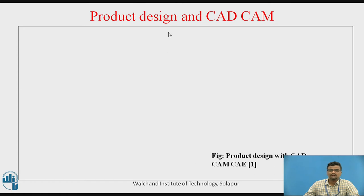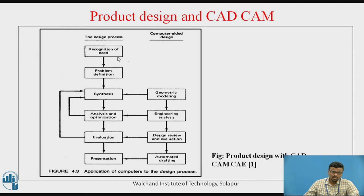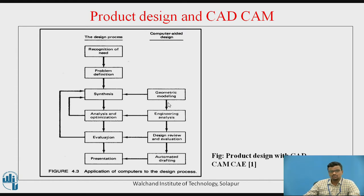Now there is another concept called computer-aided design and computer-aided manufacturing and their relationship with product design — meaning the use of CAD and CAM for the product design process. The recognition of need and problem definition remain the same. For synthesis, one more branch is attached: geometrical modeling, where computers are used to create different types of models for the new product using modeling software.